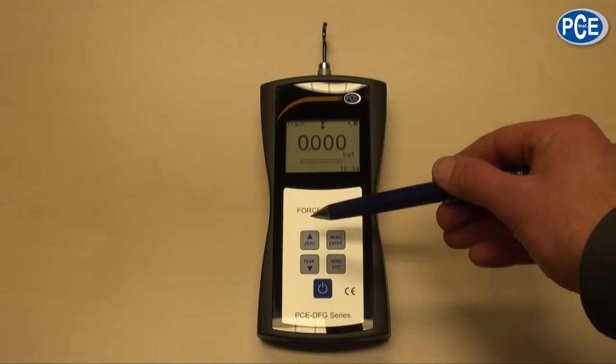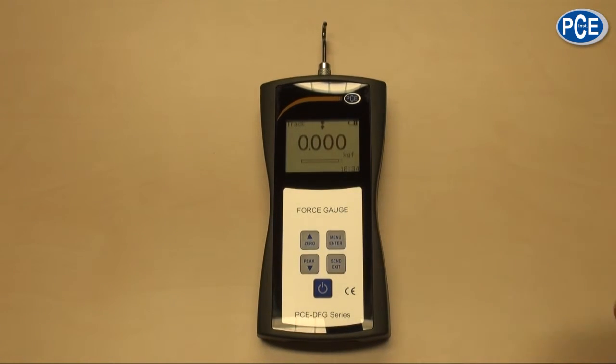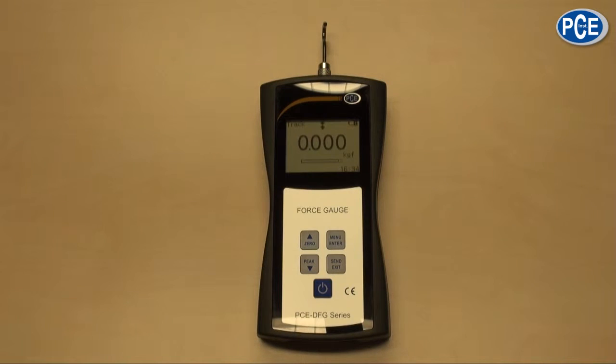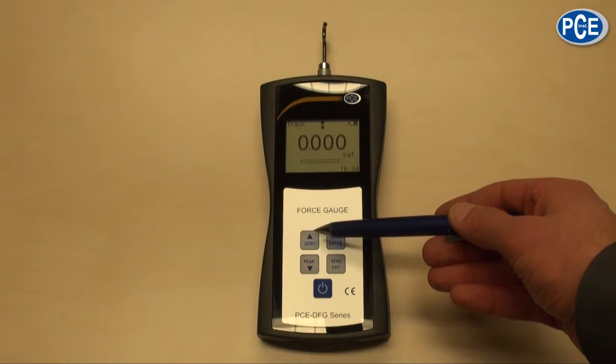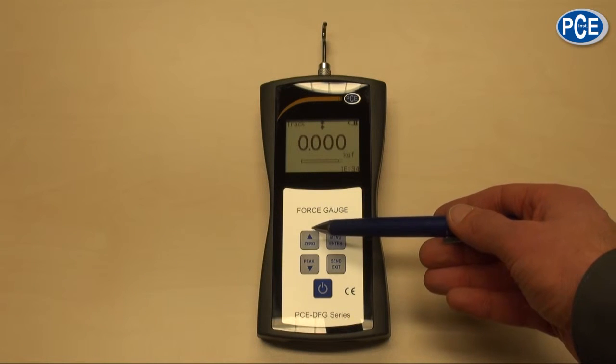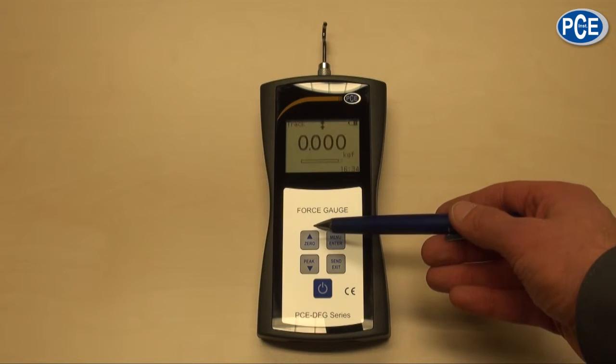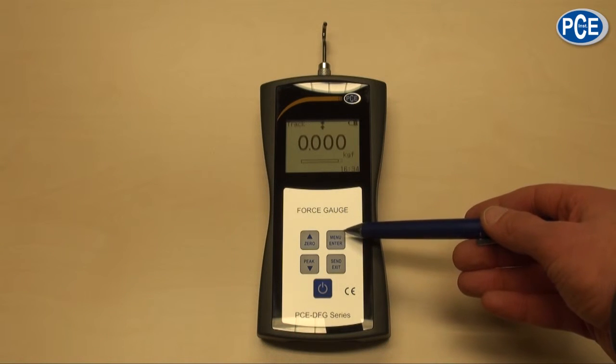The white buttons all have a double function: one function for measuring and one function for the menu. The zero button or the arrow up button has in the menu the function R and up, and during the measurement the zero function, so you can note the measurement.